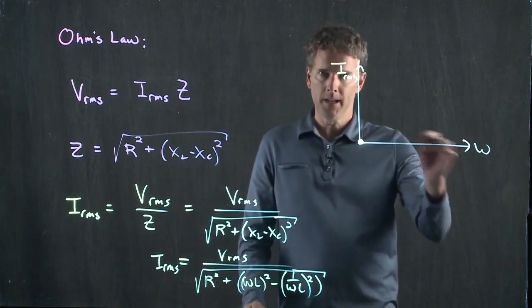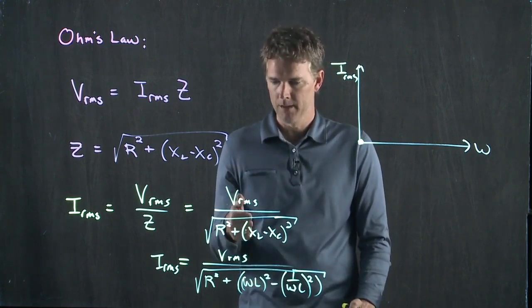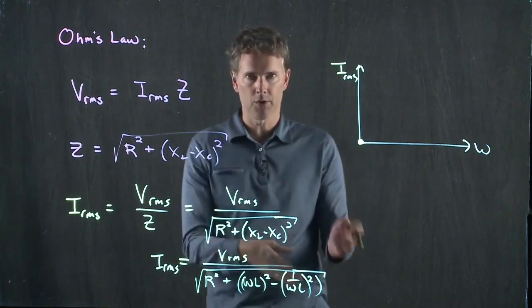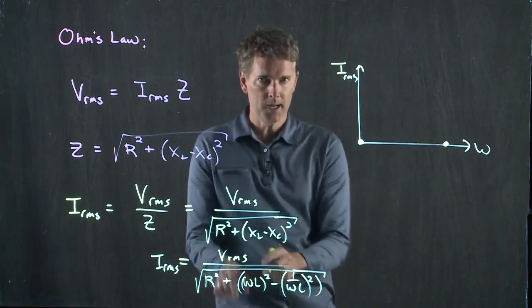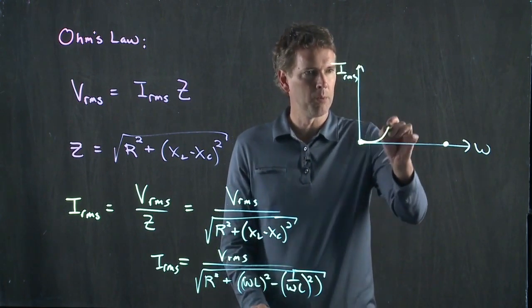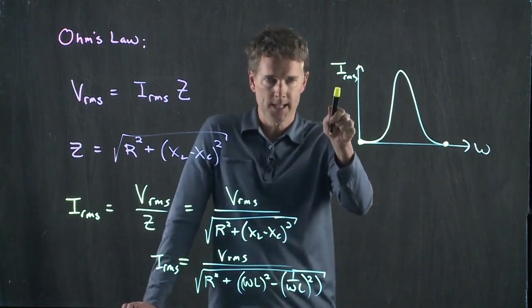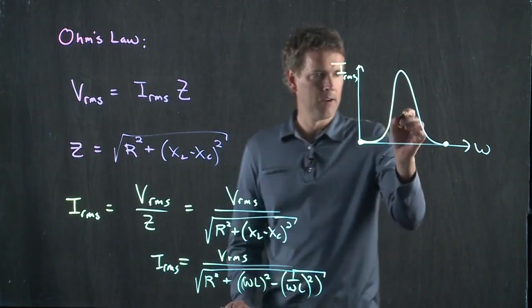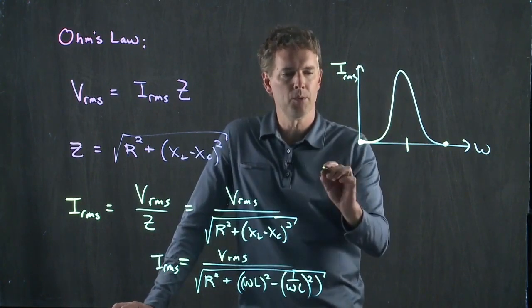But on the other end, as omega goes very high, this term, omega L, gets very big. And so omega L going to infinity in the denominator means that the current also goes to zero. But somewhere in between, it has a maximum. And so when I have two points and I have a maximum in between it, we know that we have to draw something that looks like this. This is the current as a function of frequency. And right here, you see, there is a peak. The current went up to a maximum.